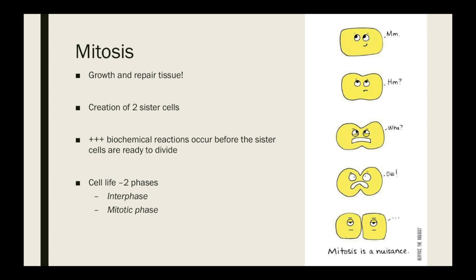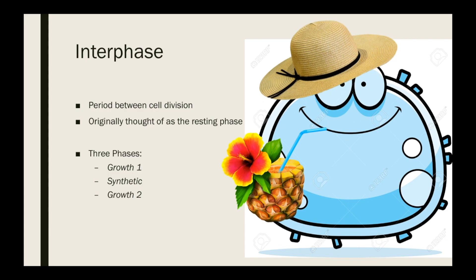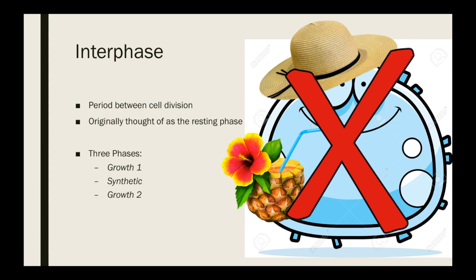During interphase, the organelles are replicating themselves and getting ready to divide. Then during mitosis, that's when the cytoplasm, the organelles, and the genetic material separate. Interphase is the period between cell division — originally people used to think of it as a resting stage for the cell, but more recently they've identified that interphase is actually divided into three phases.